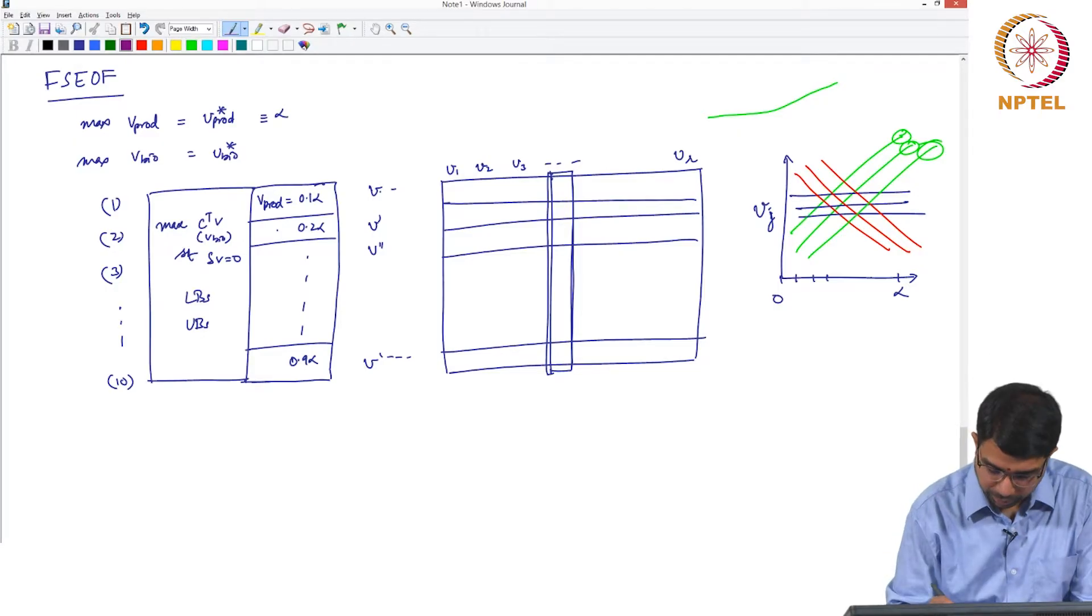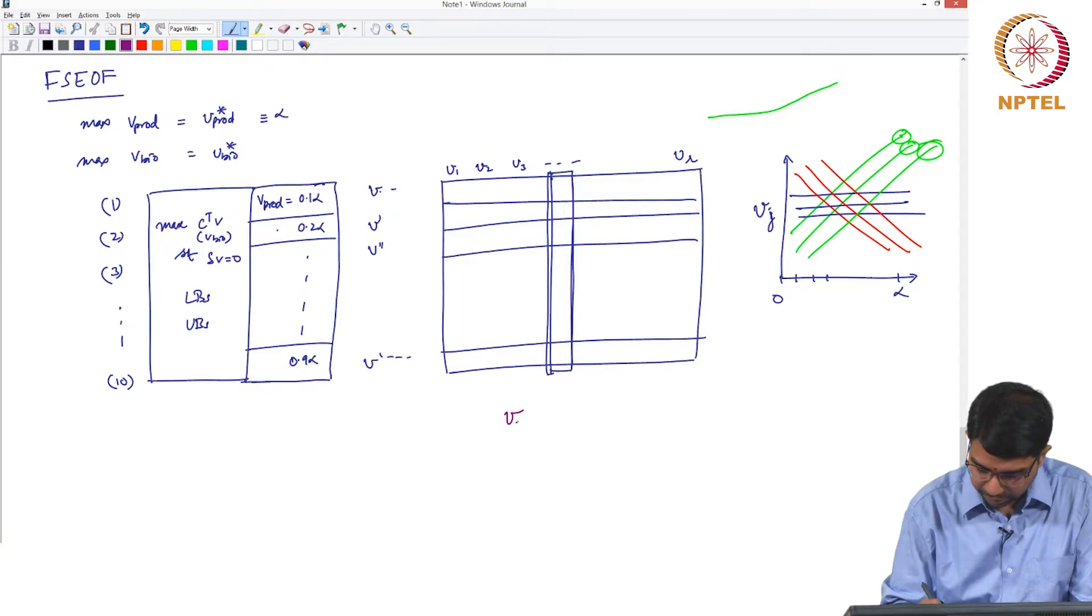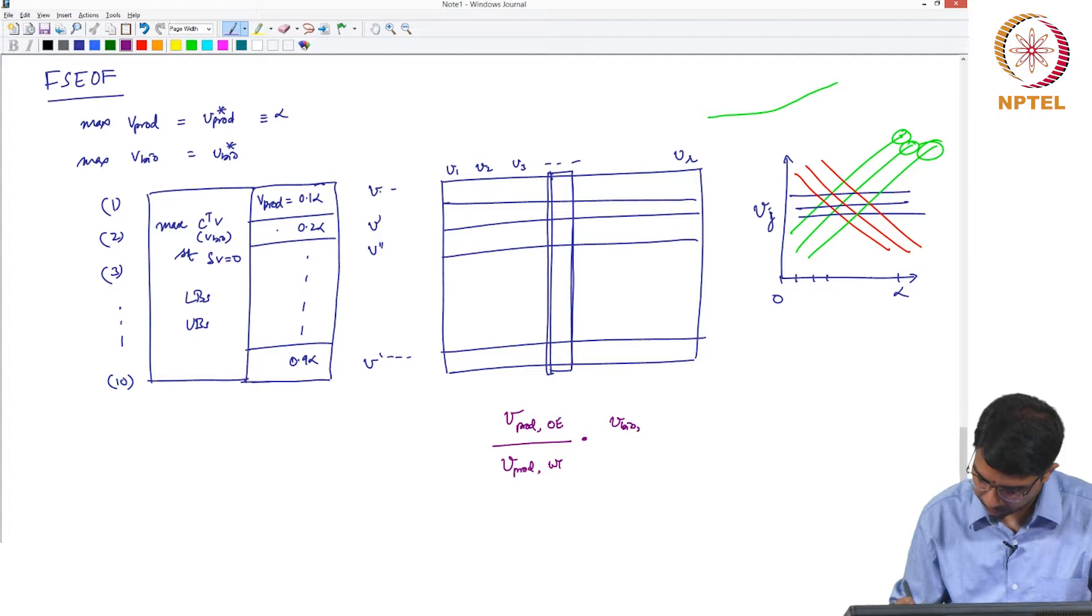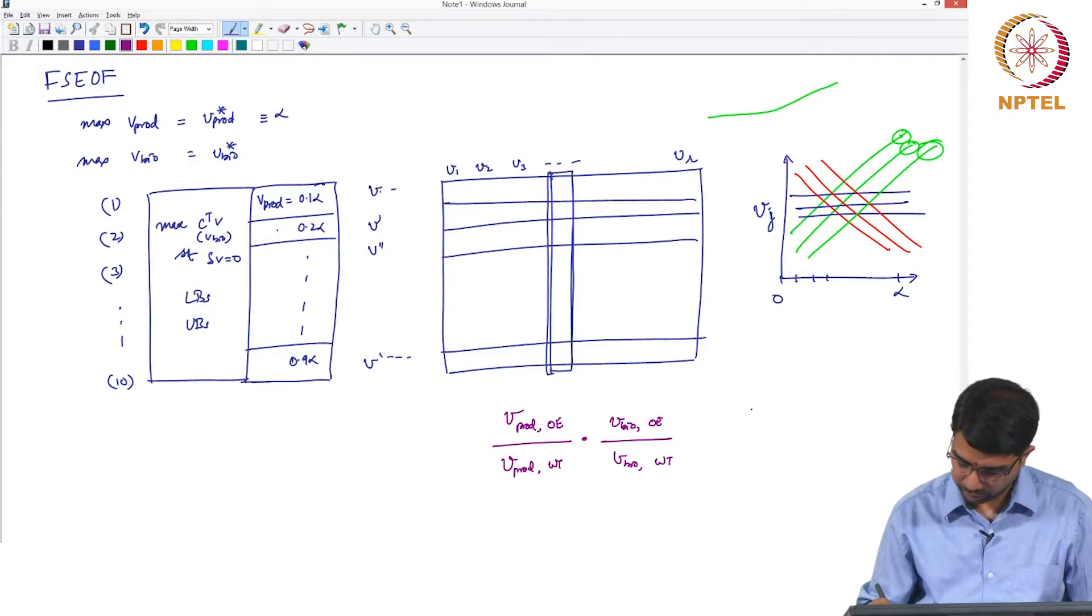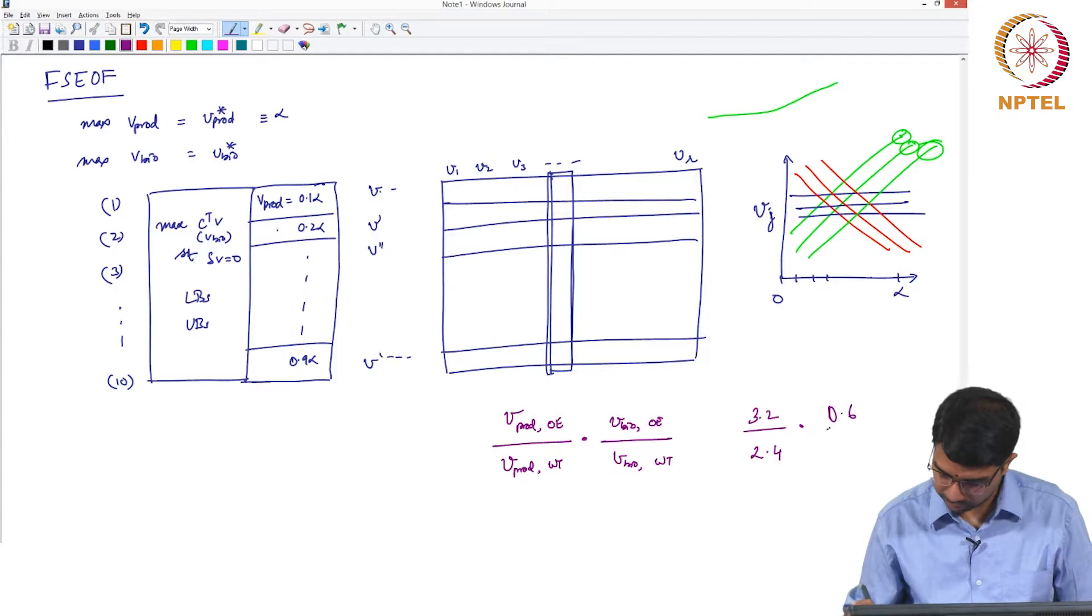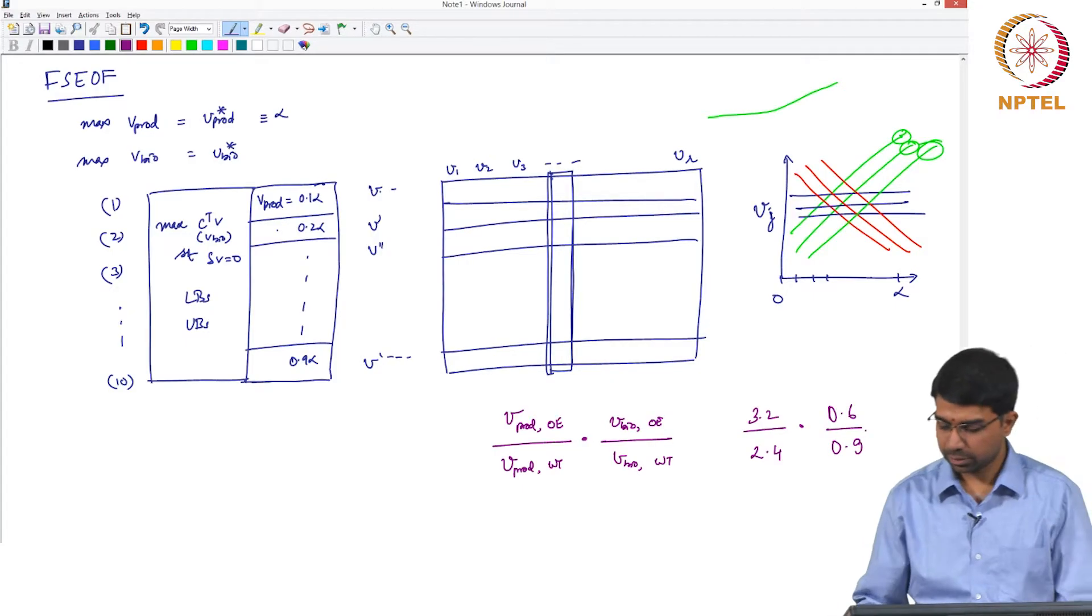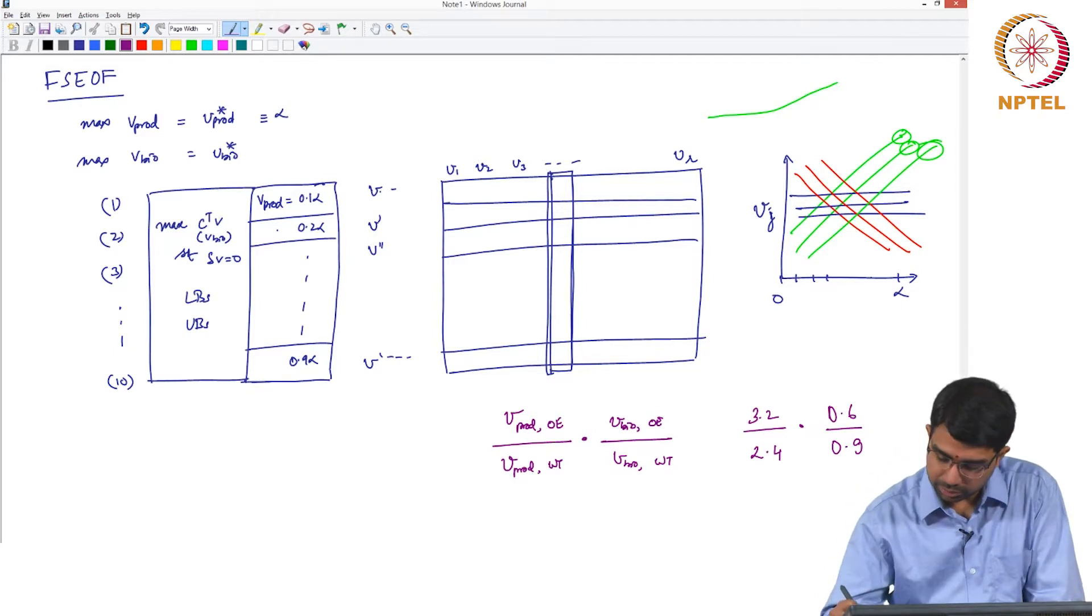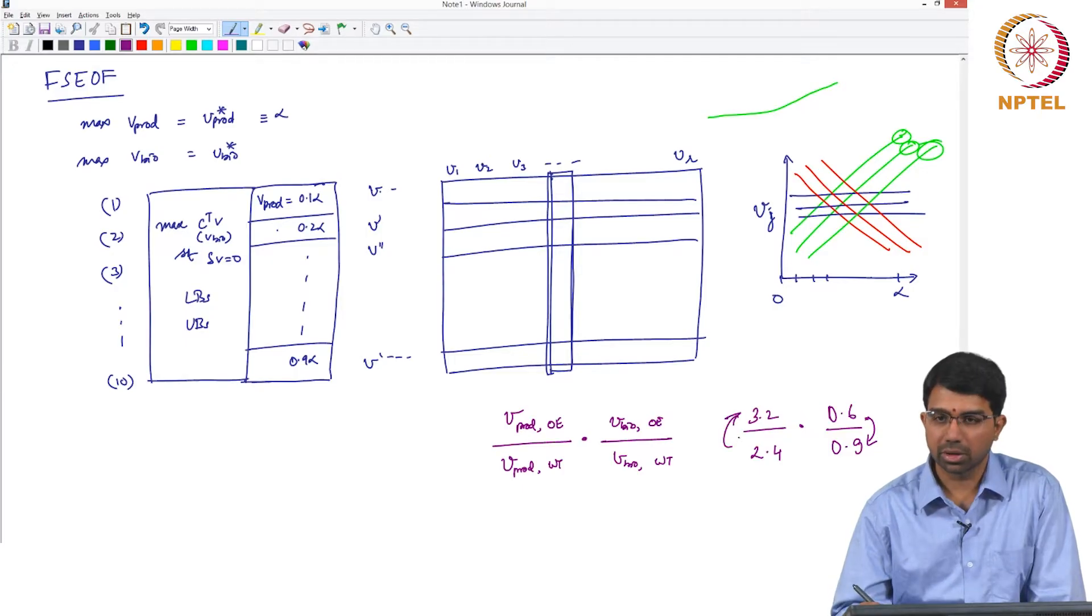And how would you quantify the improvement? You can compute a fraction which says V product overexpressed by V product wild type into V bio overexpressed by V bio wild type. So you might get something like 3.2 by 2.4 into 0.6 by 0.9. So there is some decrease in biomass and some increase in product flux.